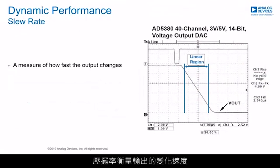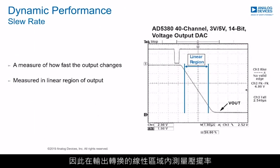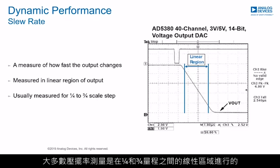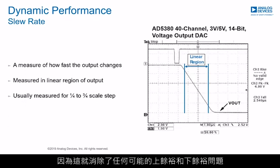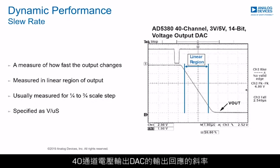Slew rate is a measure of how fast the output changes. Because the initial and final stages of the output changing can be non-linear, the slew rate is measured during the linear region of the output transition. Most slew rate measurements are taken in the linear region between one-quarter and three-quarter scale, because this removes any possible headroom and footroom issues. Slew rate is specified in volts per microsecond. The plot shows the slope of the output response of the AD5380 40-channel voltage output DAC, with a slew rate of 2.5 volts per microsecond.